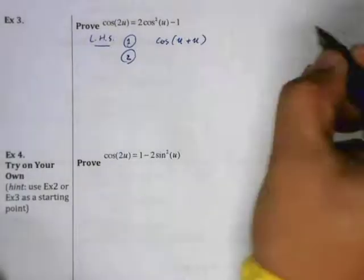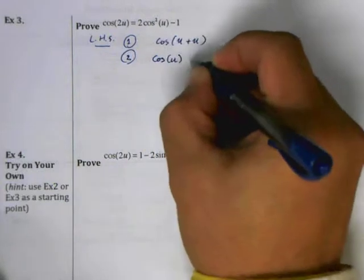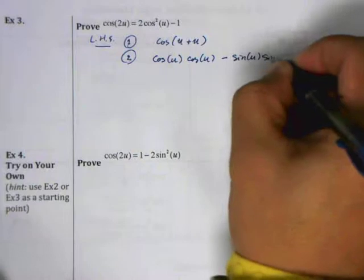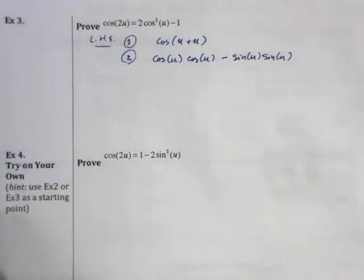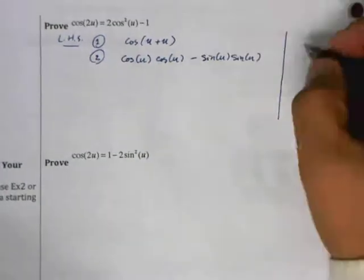Then I can just apply the cosine of a sum. So that gives me cosine u, cosine u minus sine u, sine u. Whenever you're using an identity like this, you need to write down the reason, because otherwise no one can follow your steps from step one to step two. So I'm going to write that this is cosine of sum.